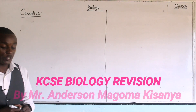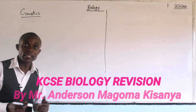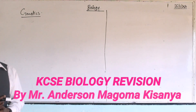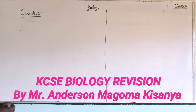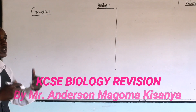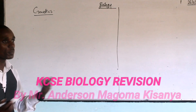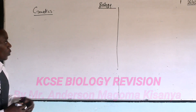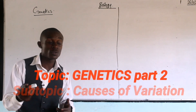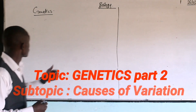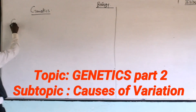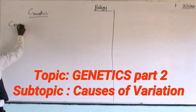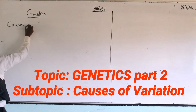Welcome to part two of our biology series revision. We are still on genetics, but now we are going to talk about what actually causes variations. In part one, we finished talking about the types of variation: continuous variation and discontinuous variation.